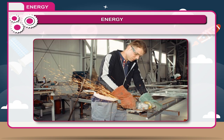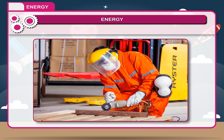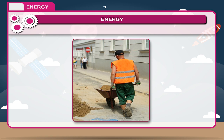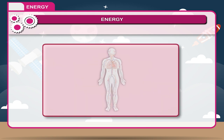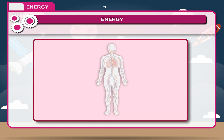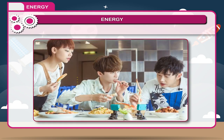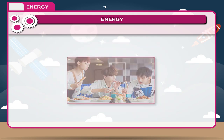The capacity to do work is called energy. Energy is measured in terms of work done. Energy is needed to do many physical works and physiological functions like respiration, circulation of blood, digestion, etc. This energy is obtained from the food that you eat.